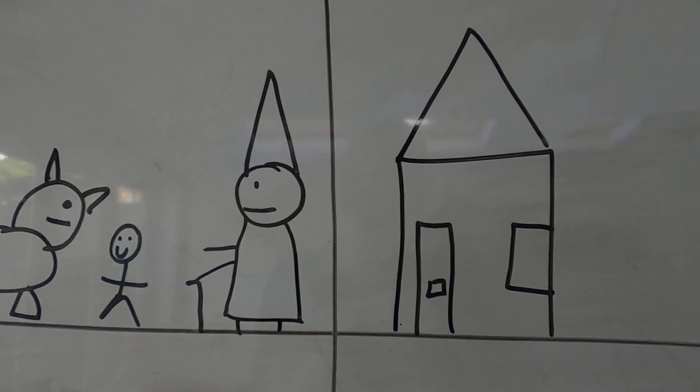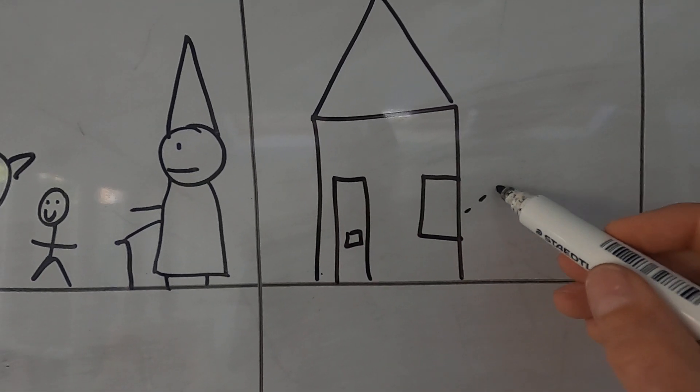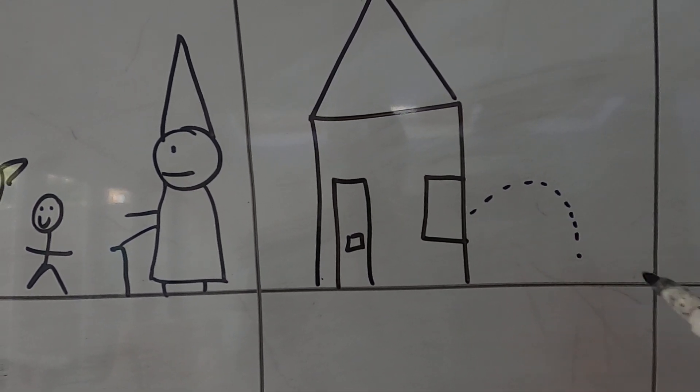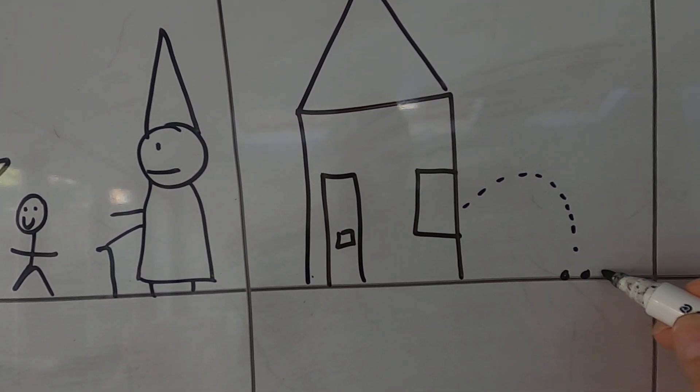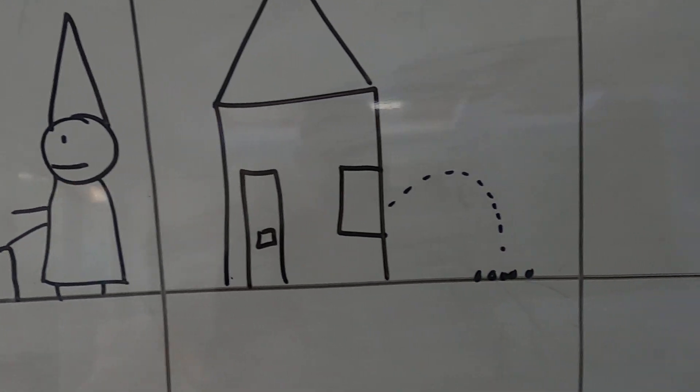But mum was furious. She threw the beans out the window and they landed on the floor in the ground.